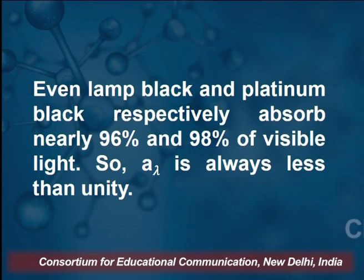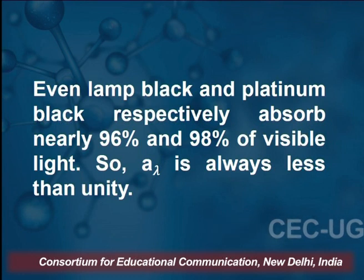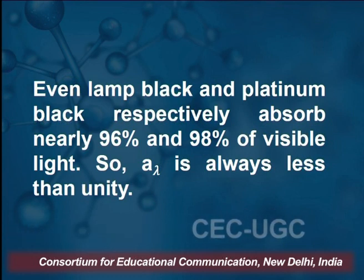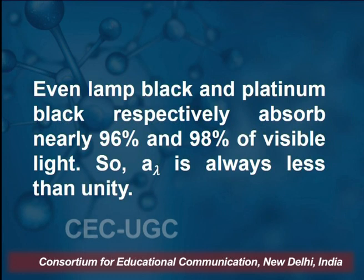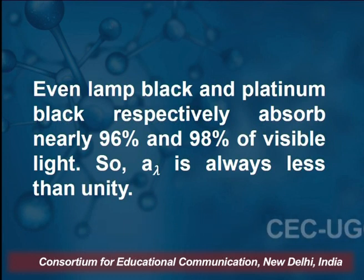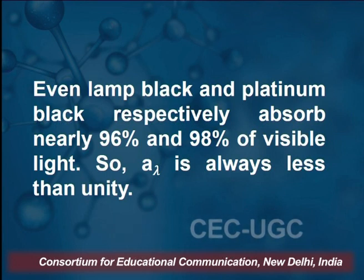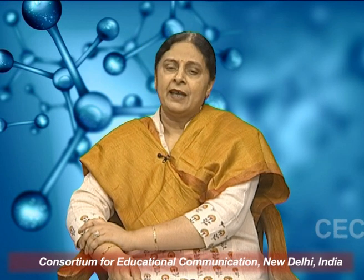Lamp black and platinum black are two substances which, if coated on a material, cause that material to act as a nearly black body. Lamp black absorbs nearly 96 percent of visible light, whereas platinum black absorbs nearly 98 percent of visible light. So A_λ is less than unity but near unity. For a perfect black body, A_λ must equal 1, meaning 100 percent of the radiation falling on it is absorbed.